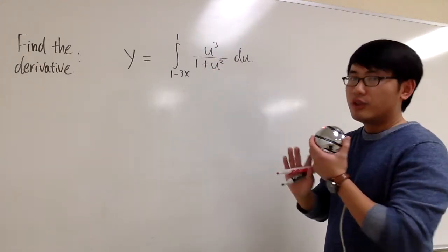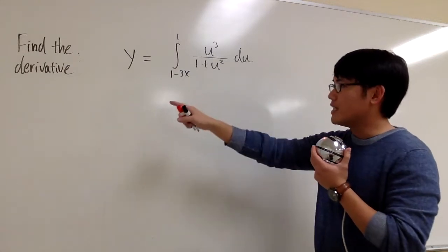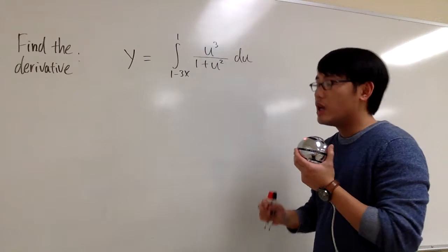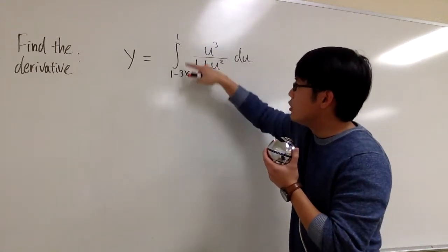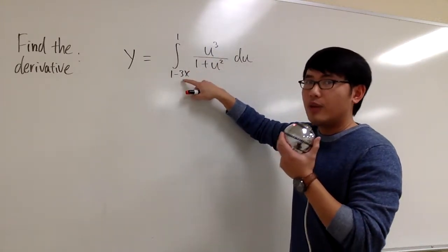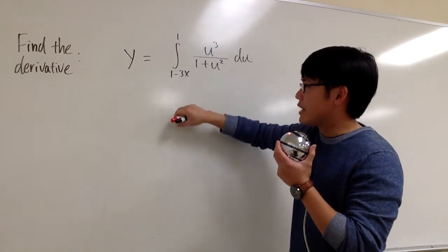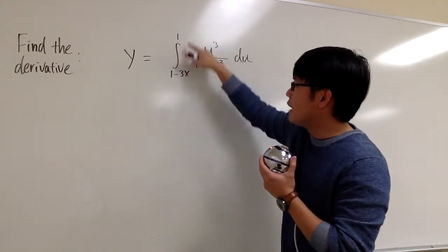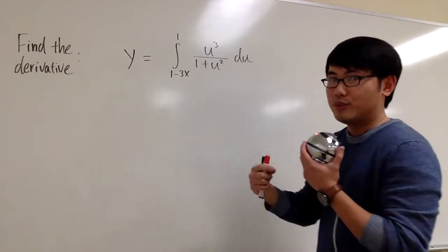FTC1 says don't worry about how to integrate this, because the derivative will cancel out the integral. But before we can use FTC1, let's take a look at the limits of integration. We have to make sure the number is on the bottom and the expression with x is on the top. However, here we have that switched, so we have to switch it back.